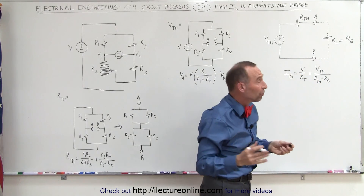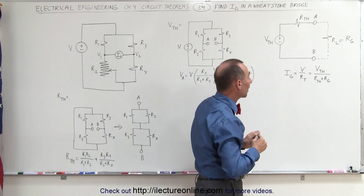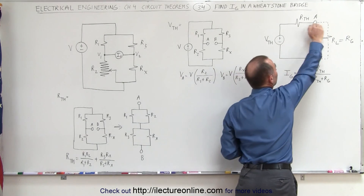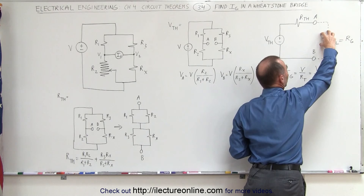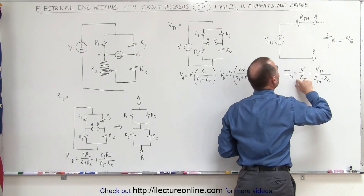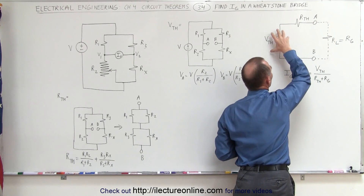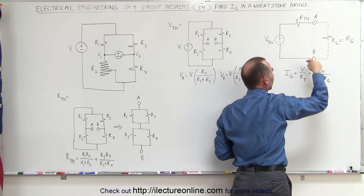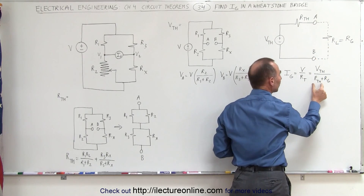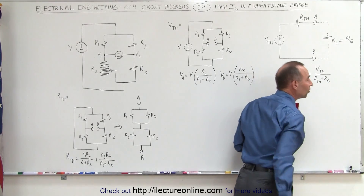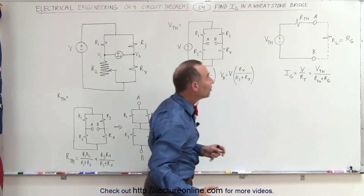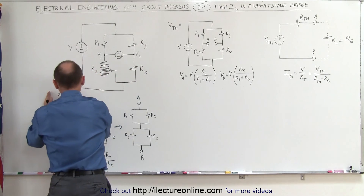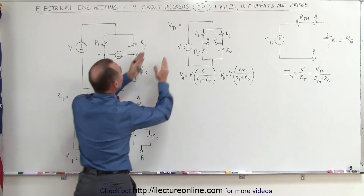It's not a big resistance — it's a small resistance — but we do have to account for it. This means that the current through the galvanometer, which has some internal resistance, is going to equal the Thevenin voltage divided by the total resistance, which is the Thevenin resistance plus the resistance of the galvanometer. So we need to take our Wheatstone bridge circuit and find both the Thevenin resistance and the Thevenin voltage.